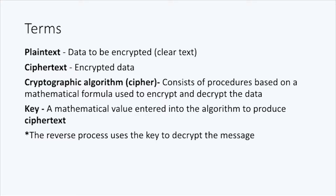We need to define some terms when talking about cryptography. Plain text is the data that's about to be encrypted — the clear text data, or data in the clear. Ciphertext is the term for data that's already been acted upon — the encrypted data. The cryptographic algorithm, or cipher, consists of various procedures based on mathematical formulas used to both encrypt and decrypt data. Each cipher has a key, a mathematical value entered into the algorithm that changes the plain text into ciphertext. This process can be reversed using the same methodology and key to decrypt the message.